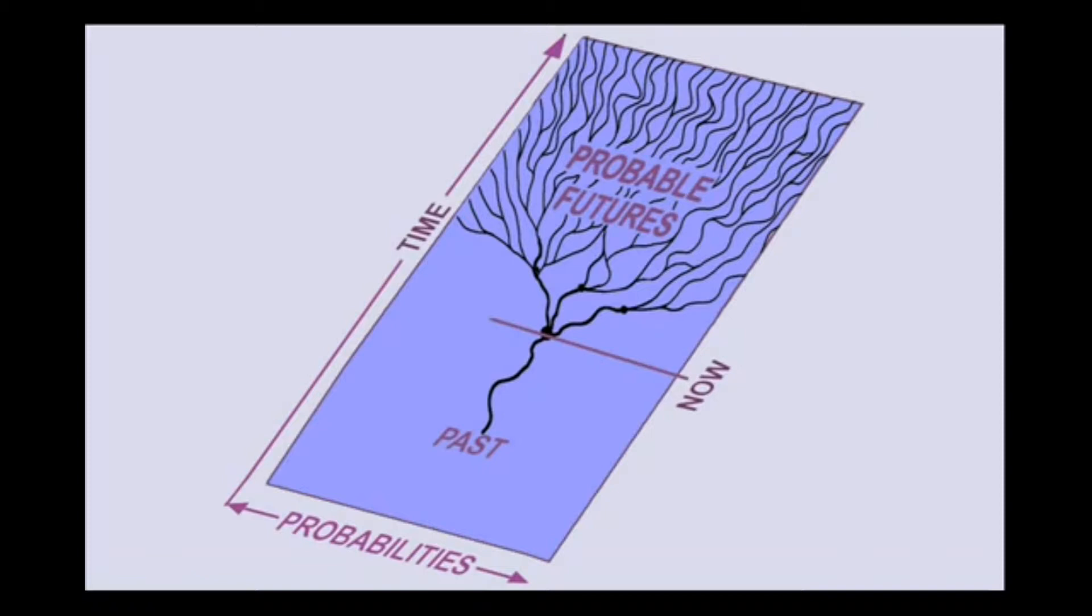In this scenario, the reality experienced by the probable self would appear to be the only real version, and we would be the probable self when viewed from that perspective.